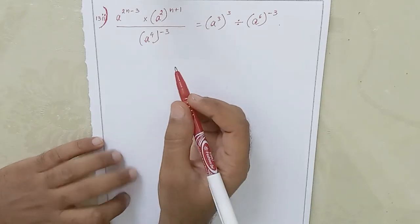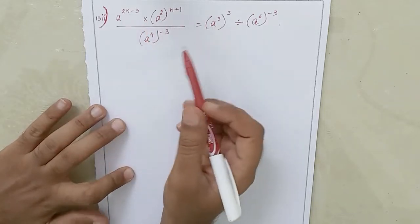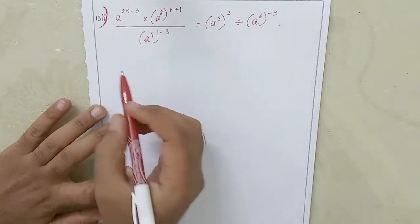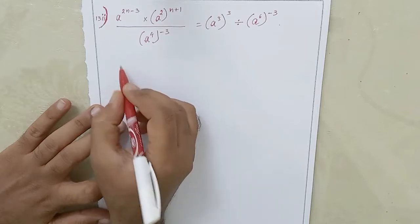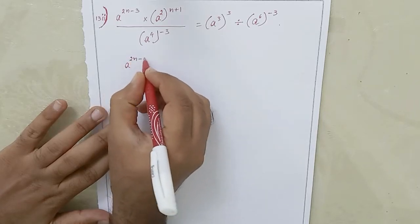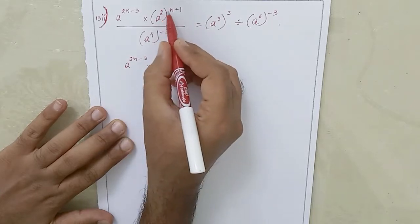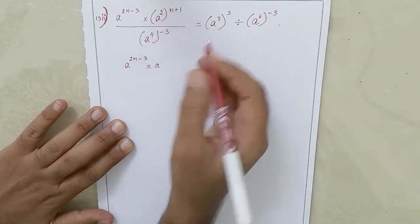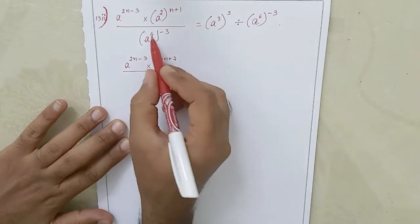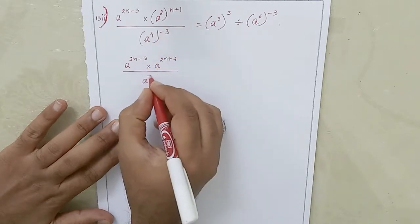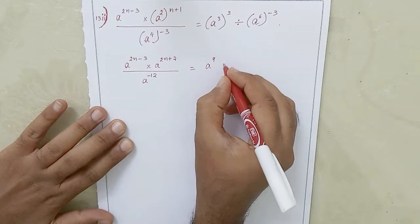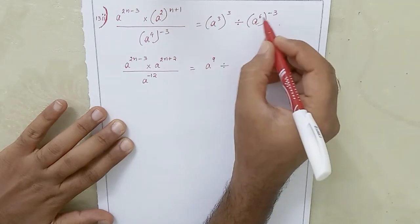This is problem 13, sub-problem 2. We need to solve this to find the value of n. I'll multiply these two powers here, and here I'll multiply this, and here also I'll multiply. The left-hand side is a power 2n minus 3, into a power 2, into 2n plus 2, into 1 to 2n plus 2, divided by a power 4 into minus 3, which is minus 12. The right side equals 3 into 3 is 9, so a power 9, divided by a power 6 into minus 3 is minus 18.